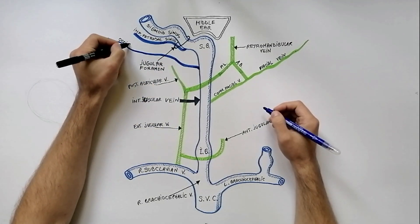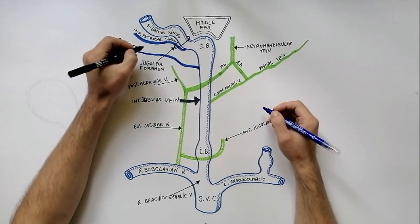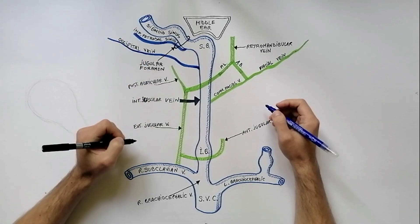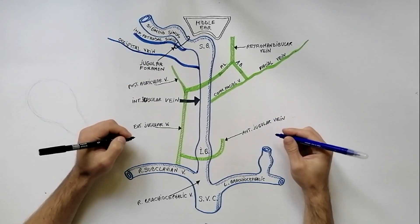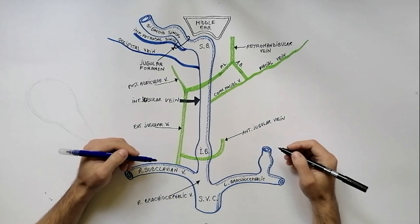The occipital vein, even though it may participate in formation of the external jugular vein, sometimes ends in the superior part of the internal jugular vein.